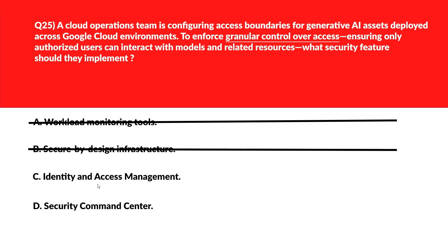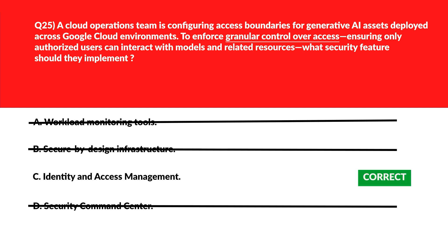Option C says Identity and Access Management, or IAM. IAM enables precise permission settings for users and resources, supporting granular control over access. Let's keep it. Option D, Security Command Center, centralizes threat visibility but doesn't configure access rules — reject. Lock Option C, IAM, as the right answer.